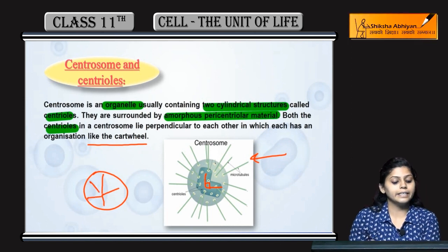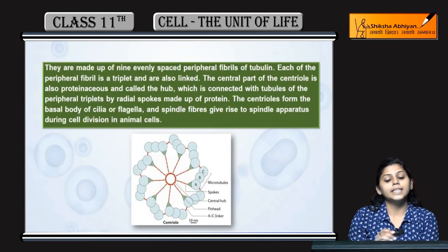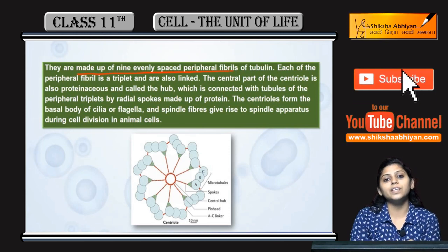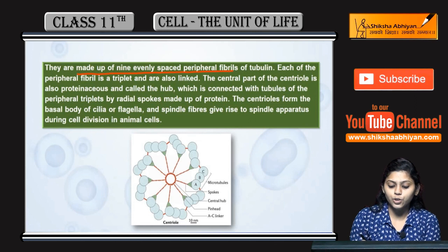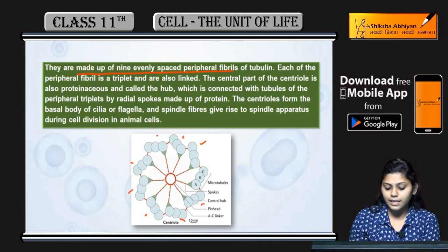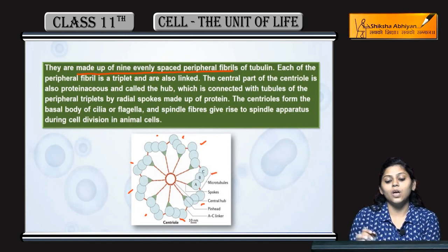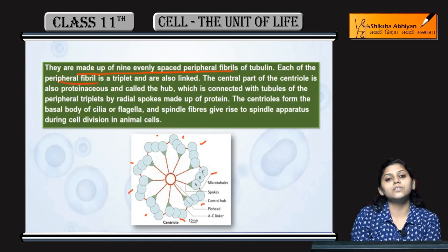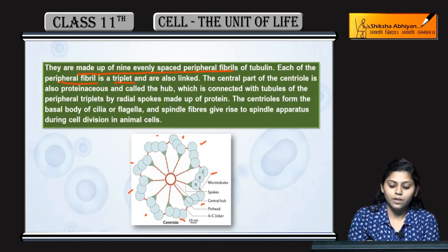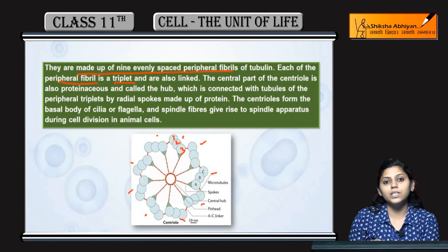They are made up of nine evenly spaced peripheral fibrils of tubulin — you can see 1, 2, 3, 4, 5, 6, 7, 8, and 9. These peripheral fibrils are arranged as triplets — 1, 2, and 3 — all triplets arranged.